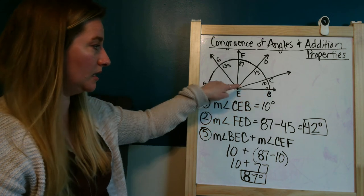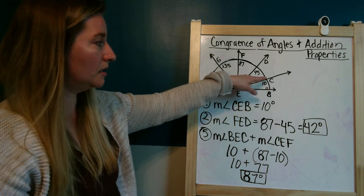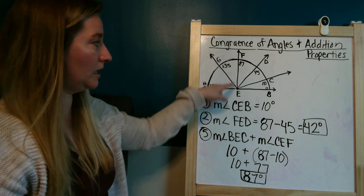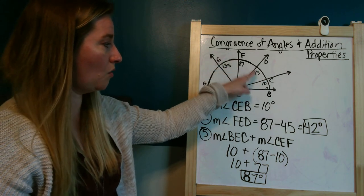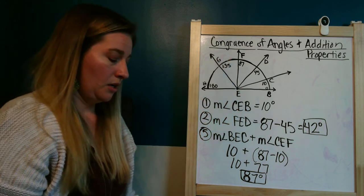In this case, it was this small angle BEC plus this bigger angle CEF that combined to make this one whole angle BEF.